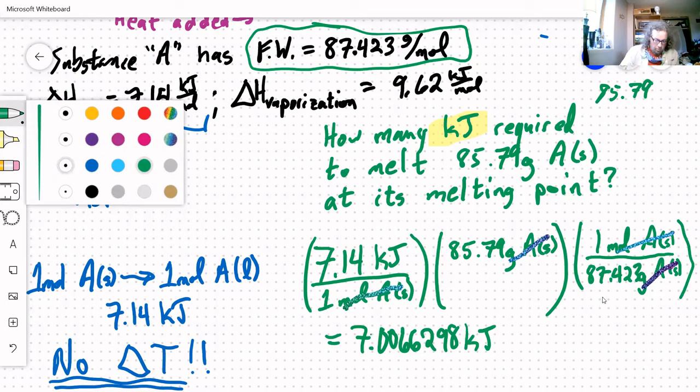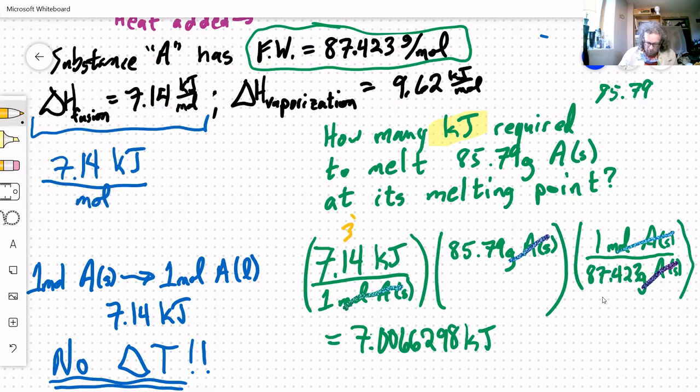Kilojoules is good. But again, we have to take a look at sig figs. I've got three coming in there, four there, five there. So all multiplication and division. Again, I have to round to the smallest number of sig figs. So I'm going to have to round to three. One, two, three. The correct answer to report here is 7.01 kilojoules.